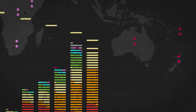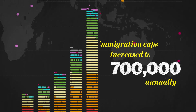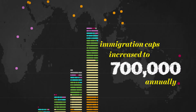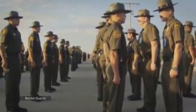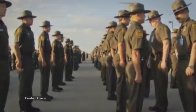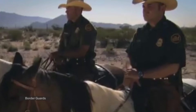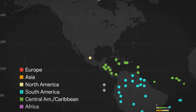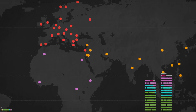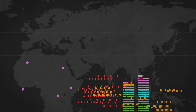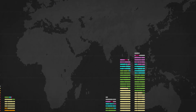In the 1990s, the U.S. increased immigration caps to 700,000 annually. The country began to invest in border security to discourage unauthorized immigration, but an exchange allowed nearly 1.7 million Mexican immigrants in the 1990s.